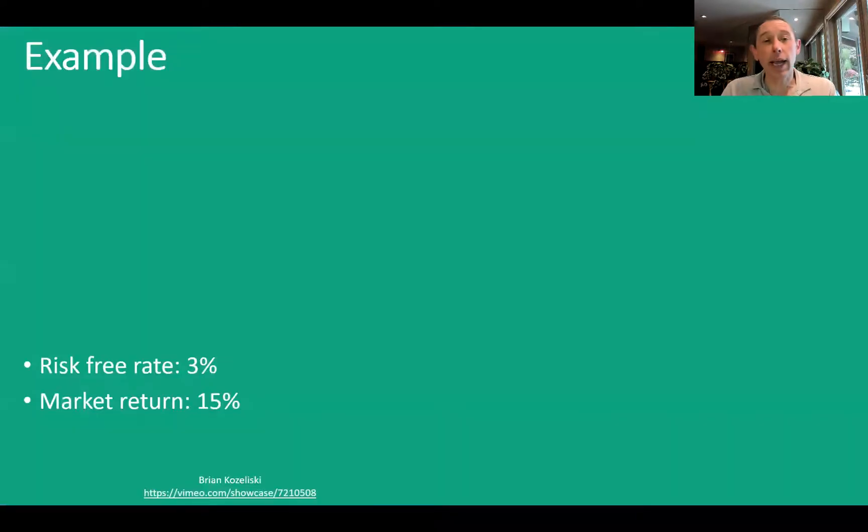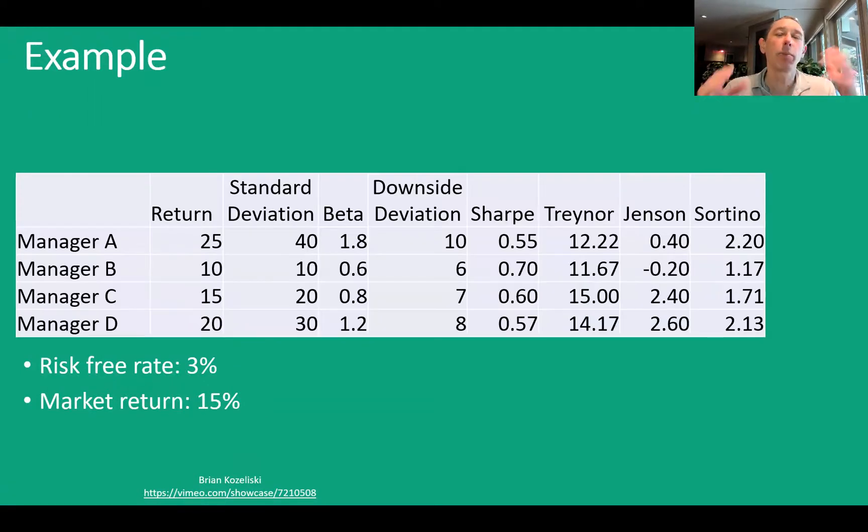Let's go ahead and take a look at an example here. So we got the risk-free rate at 3%. We get the market at 15%. Stop this video if you need to. But here's a bunch of numbers. So we have four different managers or four different investors.